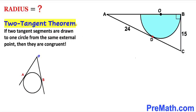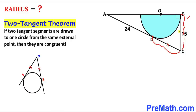Let's recall the two tangent theorem. According to this theorem, if two tangent segments are drawn to one circle from the same external point, then they are congruent — segment AO equals segment OB. Applying this to our problem, since there are two tangents and this side is 15, therefore this other side length is going to be 15 units as well.